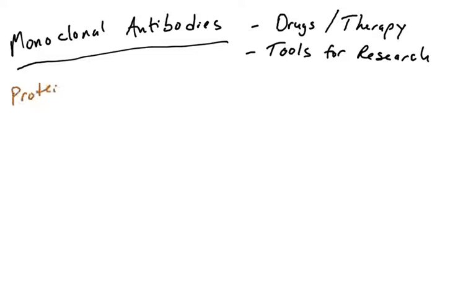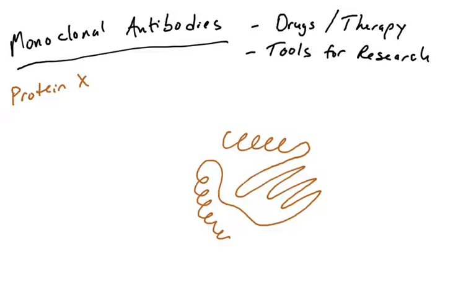Monoclonal antibodies first start with a target. Let's say a scientist or clinician wants to generate an antibody that binds some protein — we're going to call it protein X. Protein X is very important in some disease or disorder, or a scientist wants to study it. So what does the scientist do to generate an antibody that binds protein X, making it a useful tool for medicine and research?